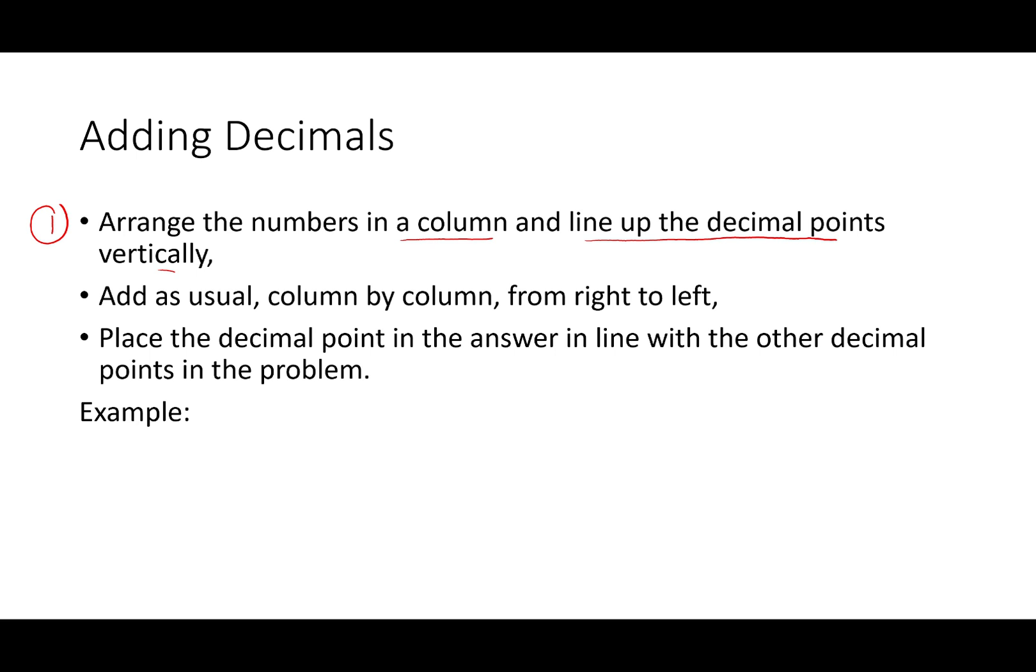Then you add as usual, column by column from right to left. For example, if you want to add 14.5 plus 1.89, to do the addition, it's best to put them in column: 14.5, where you line up the decimal places together, plus 1.89.